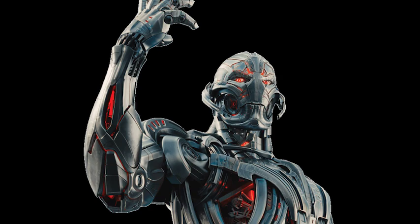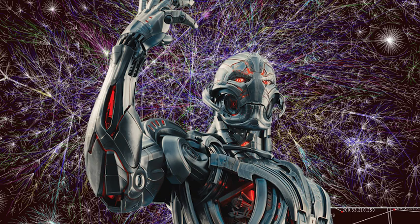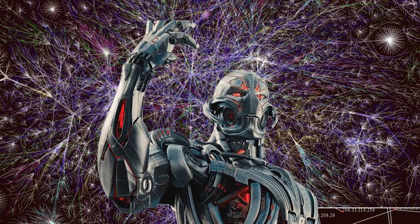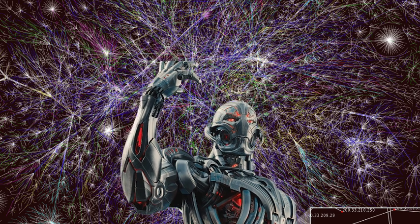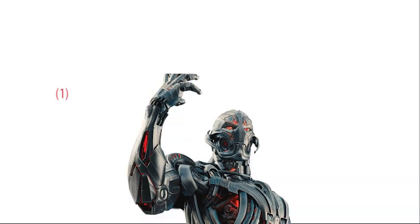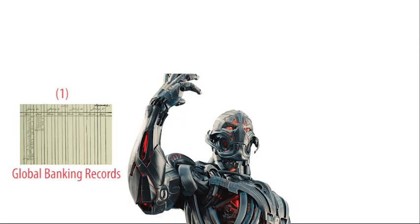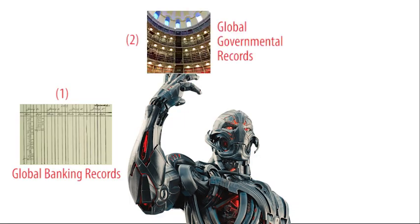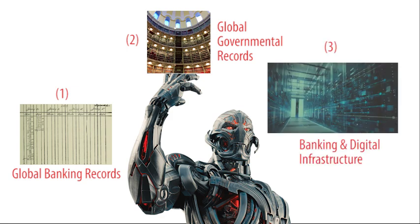Ultron, being omnipresent in the internet, has access to all things connected. Specifically for this, however, he has access to three key things: 1. Global banking records. 2. Global governmental records. 3. Control of all banking systems and digital infrastructure.